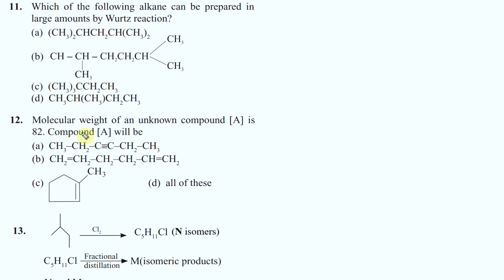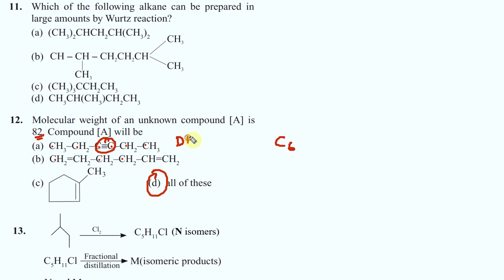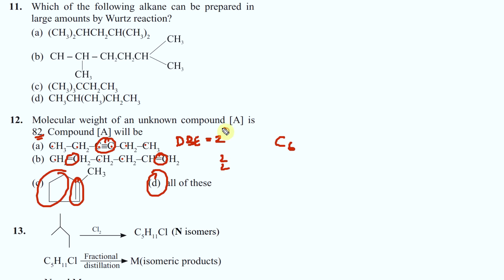Molecular weight of unknown compound is 82. Compound A could be - count the carbons. The fastest way: 1, 2, 3, 4, 5, 6 carbons - 5 plus 1 is 6. All of them are C6 compounds. I do not count hydrogens here. What is the double bond equivalent? The double bond equivalent is 2 for all of these - so it is going to be all of them.